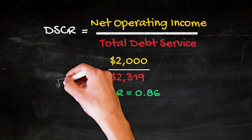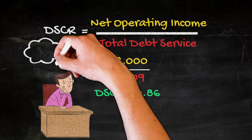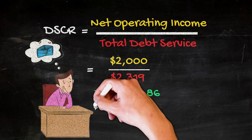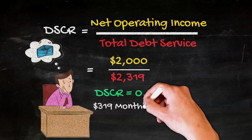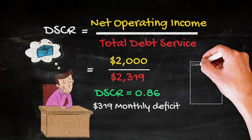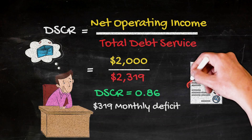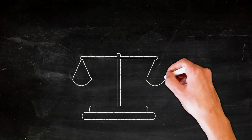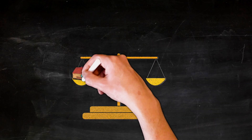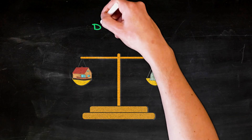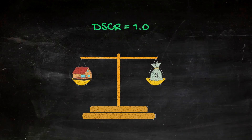You don't need to be particularly experienced in real estate to know that this is not a very good outcome from a pure cash flow perspective, as you would have a monthly deficit of $319. And in fact, assuming these numbers are correct, there is zero chance you are getting a loan for $360,000 from a bank on this property. This is because in order for a property to break even and cover all of its expenses including the debt service, the DSCR has to equal at least 1.0.